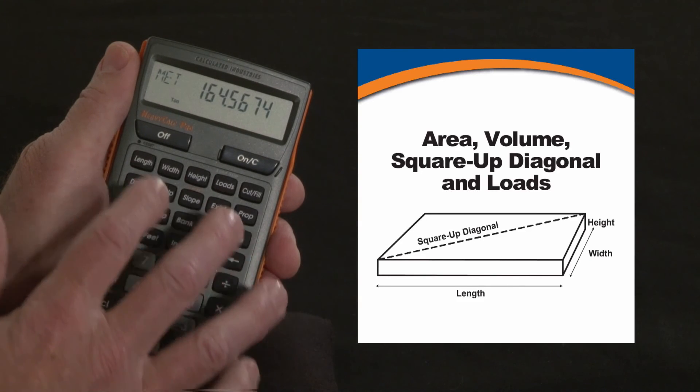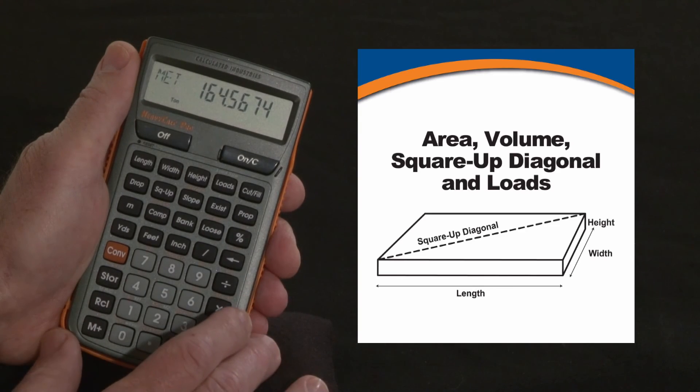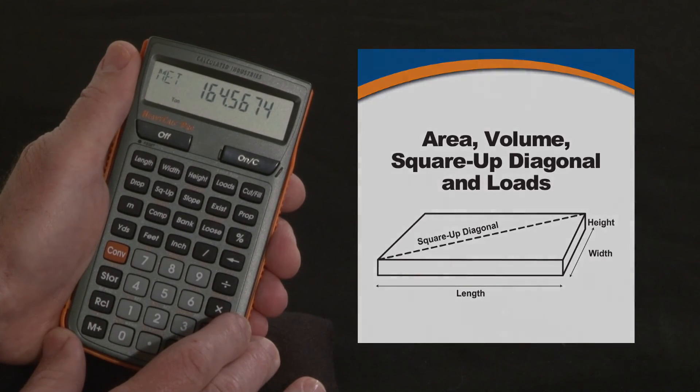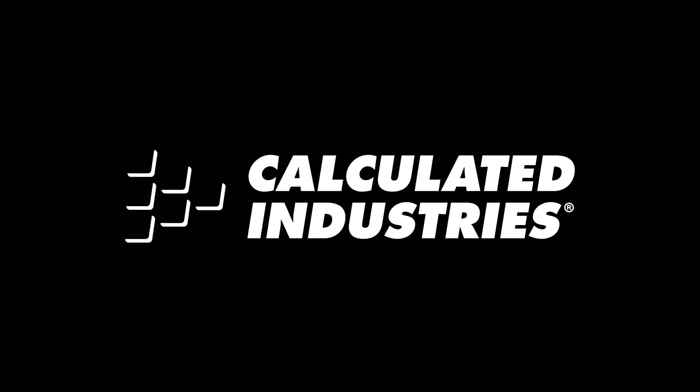So just with three entries, you get a whole series of answers. You get areas, volumes, perimeters, square up diagonals, volume, and loads. So that's a quick overview on that area and volume functions. For more details, you can download our user guide at www.calculated.com slash support.